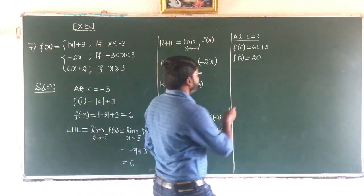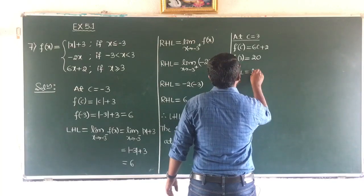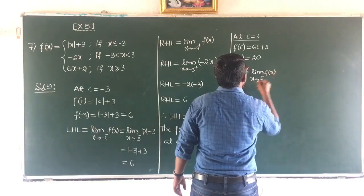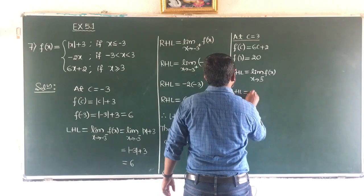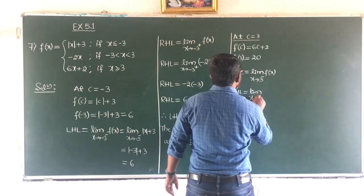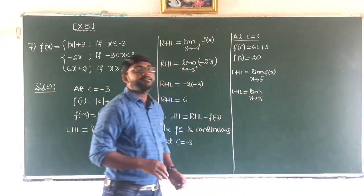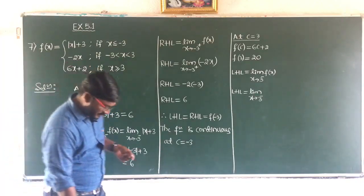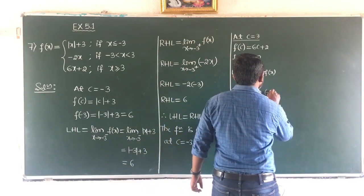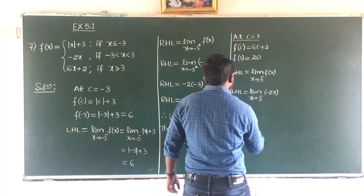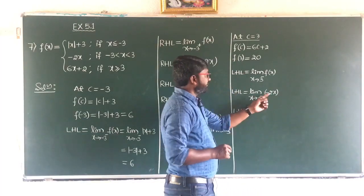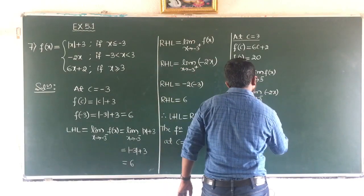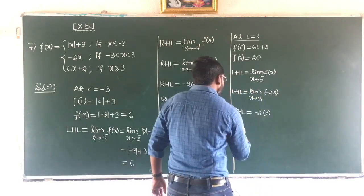For LHL, limit as x tends to 3 minus of f(x): since 3 minus means less than 3, the function is minus 2x. Applying the limit, minus 2 into 3 gives minus 6. So LHL equals minus 6.